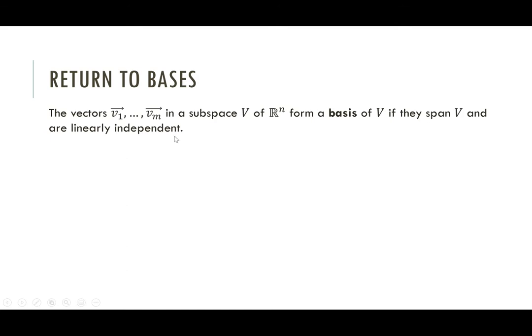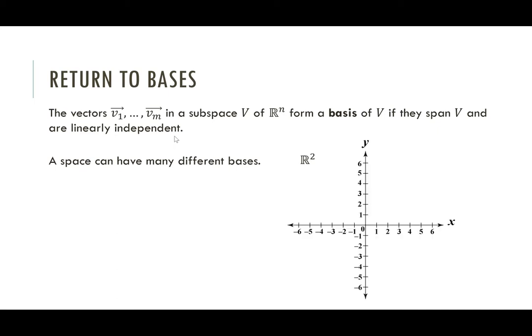We need a basis that spans your space, and the vectors have to be linearly independent. Now let's also recall that a space can have many different bases. If you're just thinking of R^2, we've got our standard basis — the vectors (1,0) and (0,1) — but we could have any number of alternate bases.